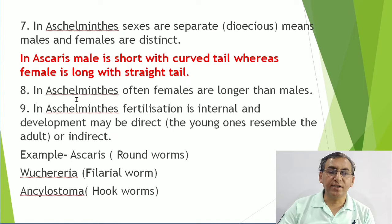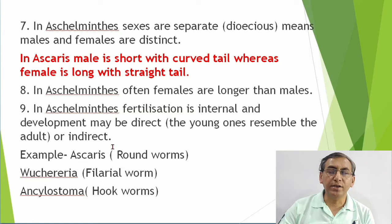As per NCERT, in Aschelminthes females are often longer. The male is short with a curved tail and the female is long with a straight tail. Fertilization is internal, and development may be direct - where the young ones resemble adults - or indirect.